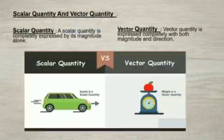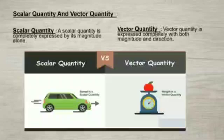A scalar quantity is a physical quantity that can be described by a single element of a number field. A quantity that can be expressed by magnitude alone is called a scalar quantity. For example, only magnitude, that is a value with a unit, is used to express quantities such as length, breadth, area, mass, temperature, density, time, work etc. Thus we can say that the length of a tunnel is 2 km. The fever, that the temperature is 101.